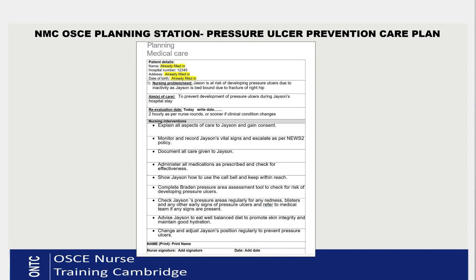For reevaluation — this is how often we're going to review Jason regarding his risk of pressure ulcers, meaning how often we'll go and check on him and look at his pressure areas. We write today's date — that would be your exam date — and then, as per the national recommendation for nursing rounds, we write: two-hourly as per nurse rounds, or sooner if clinical condition changes. That's our reevaluation guidance.